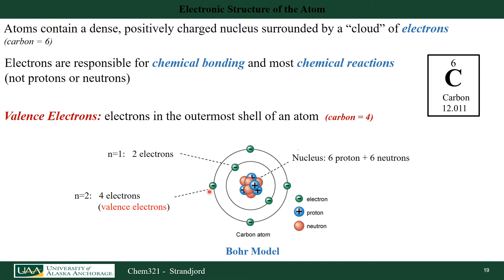Looking at the Bohr model for the carbon atom, there are four electrons in the outermost orbit and two electrons closer to the nucleus. The two close to the nucleus, in the quantum mechanical shell n=1, are not typically involved in chemistry. It's the outermost electrons — the ones not as strongly bound to the nucleus — that are involved in chemical reactions. We call those our valence electrons, and carbon happens to have four valence electrons.